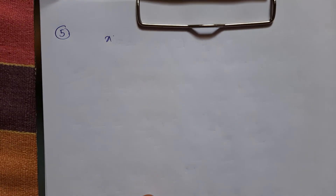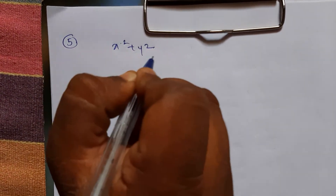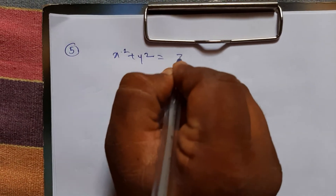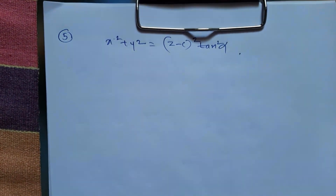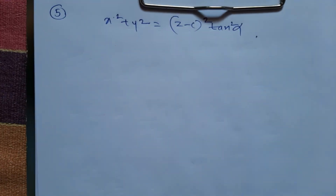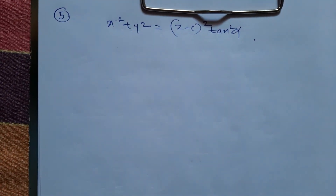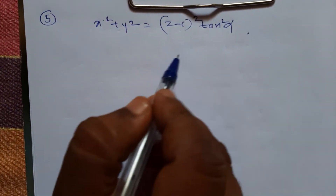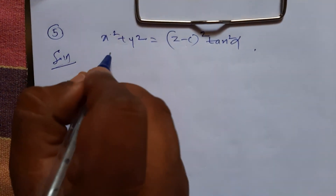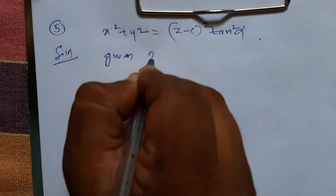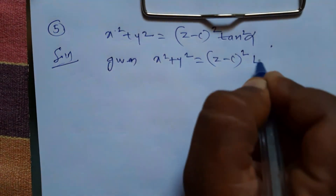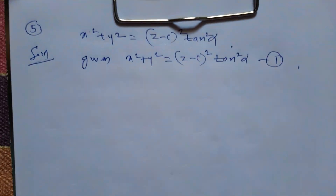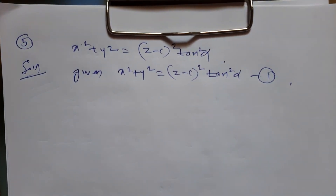We take one more example: form the PDE for x² + y² = (z - c)²·tan²α. In this example, the independent variables are 2 (x and y) and the arbitrary constants are 2 (c and α), so it involves a first order differential equation. I denote this as equation number 1.